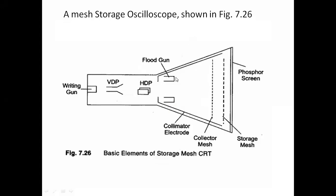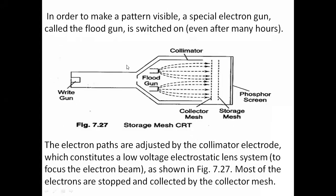The electrons from the flood gun are collected by the collector mesh. The alignment of the electron beam from the flood gun is controlled by the collimator electrodes. This is the storage mesh of the CRT. The flood gun produces electrons which move through the storage mesh and fall on the phosphor screen. The remaining electrons not passed through the storage mesh are collected by the collector mesh.